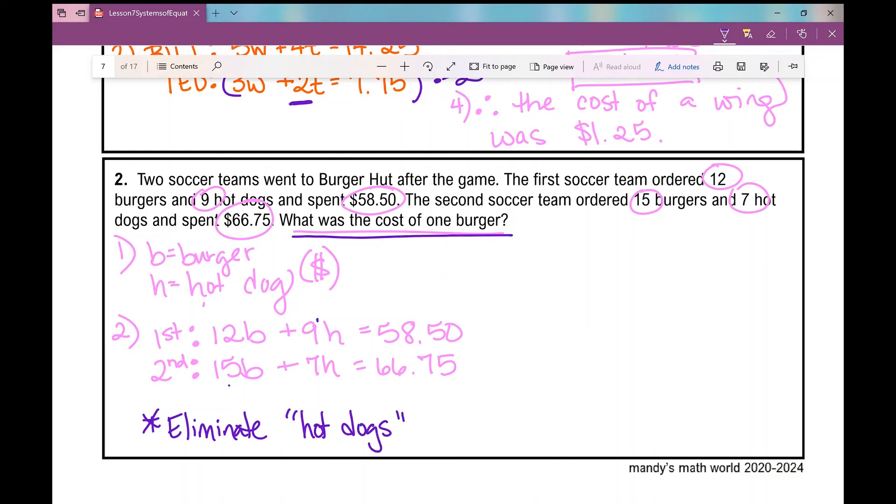Well, what's the least common multiple of 7 and 9? It's 63, which means I'm going to need to multiply this first equation by 7 to get 63. I'm going to have to multiply the second equation by 9 to get 63. I want one of them to be positive and one of them to be negative. Well, I could multiply this top equation by negative 7 or this bottom equation by negative 9. It doesn't matter. You'll end up getting the same thing. So I'm just going to multiply the top equation by negative 7.